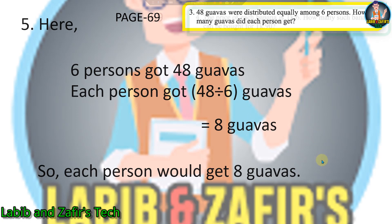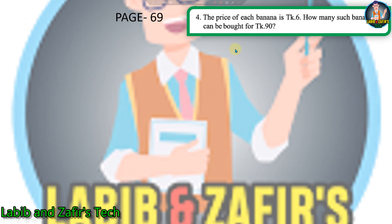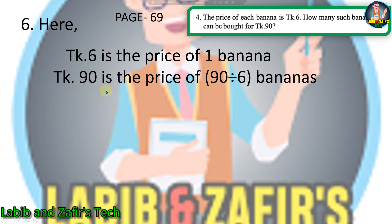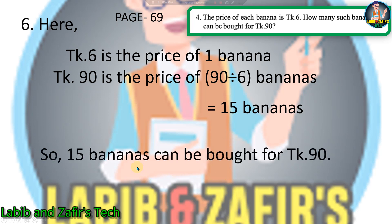Our sixth word problem is from page 69: the price of each banana is taka 6 — how many bananas can be bought for taka 90? Taka 6 is the price of one banana, so taka 90 is the price of 90 divided by 6 bananas, which equals 15 bananas. We can verify: 15 multiplied by 6 equals 90. So 15 bananas can be bought for taka 90.